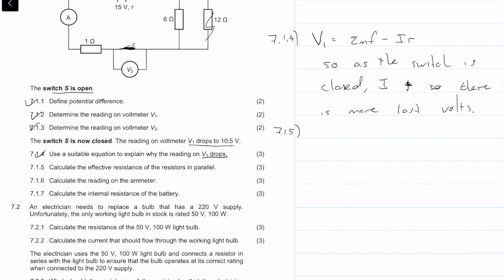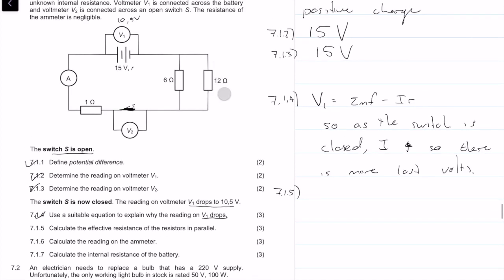Question 7.1.5: calculate the effective resistance of the parallel circuit. Using 1/R_parallel = 1/R1 + 1/R2, that's 1/6 + 1/12. Solving for R_parallel, we get a value of 4 ohms.